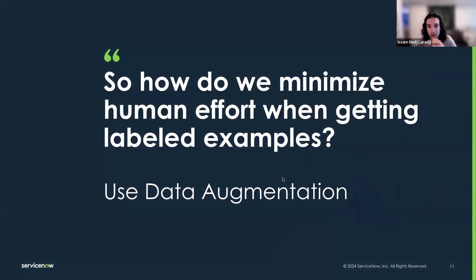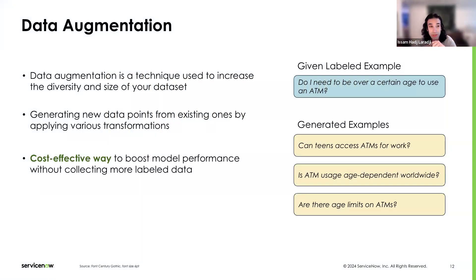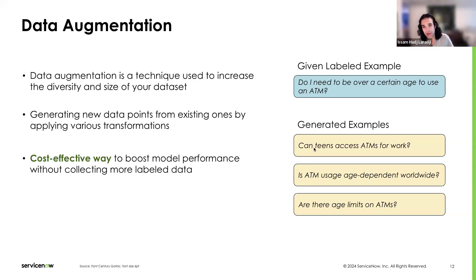So how do we minimize human effort when getting labeled examples? One way is data augmentation — a very powerful technique that allows us to increase the diversity and size of a dataset with minimal human intervention. It generates new data points from existing ones by applying various transformations. For example, 'Do I need to be over a certain age to use an ATM?' can be paraphrased, have synonym replacements applied, and so on, giving us more examples. This is a cost-effective way to boost model performance without manually collecting more labeled data.